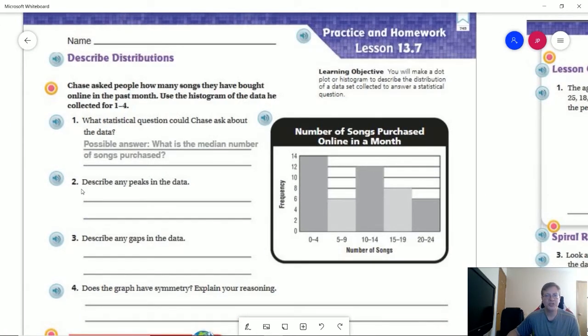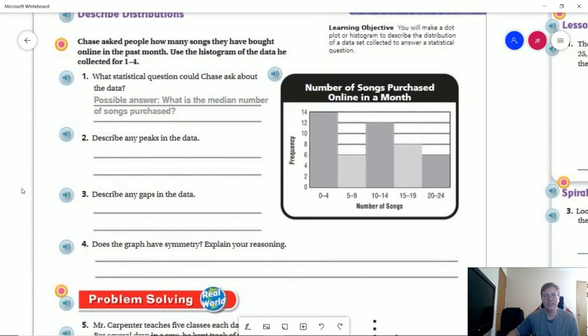For number two, we want to describe the peaks. You can gather that from looking at the graph. Describe any gaps. Hopefully nobody puts anything for that because there are no values of zero for this. Does the graph have symmetry? Again, it's not going to be symmetrical throughout the entire graph.